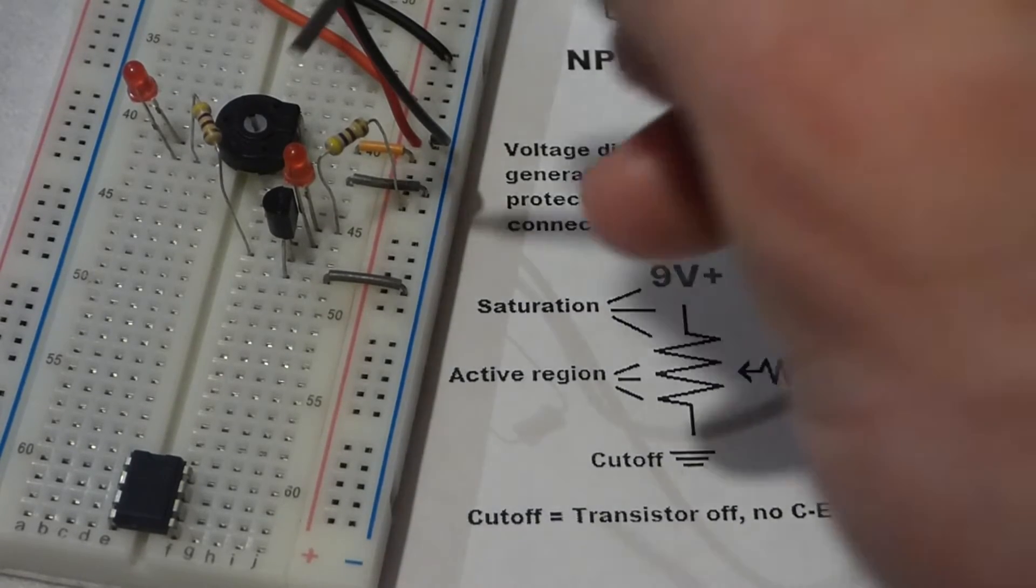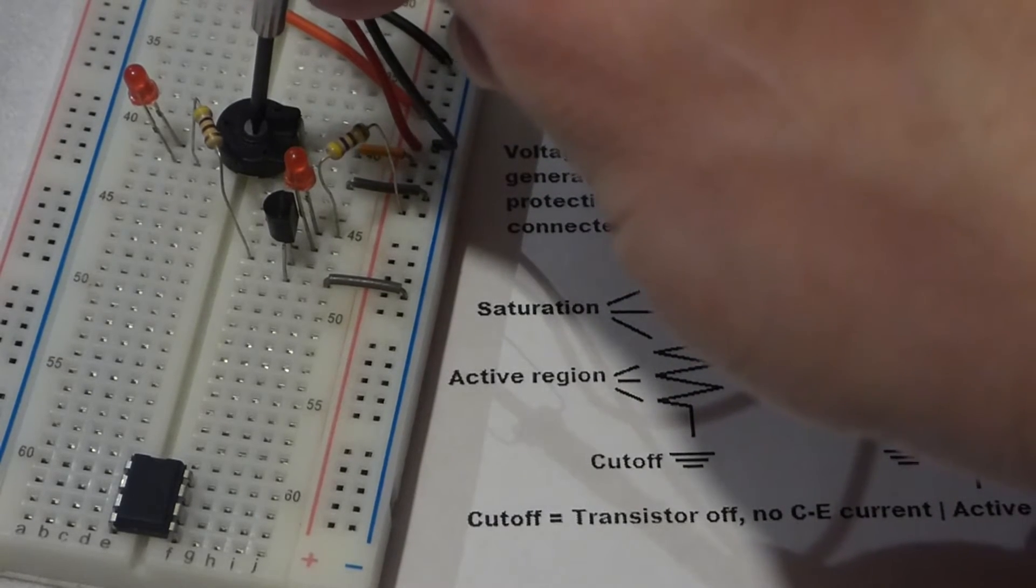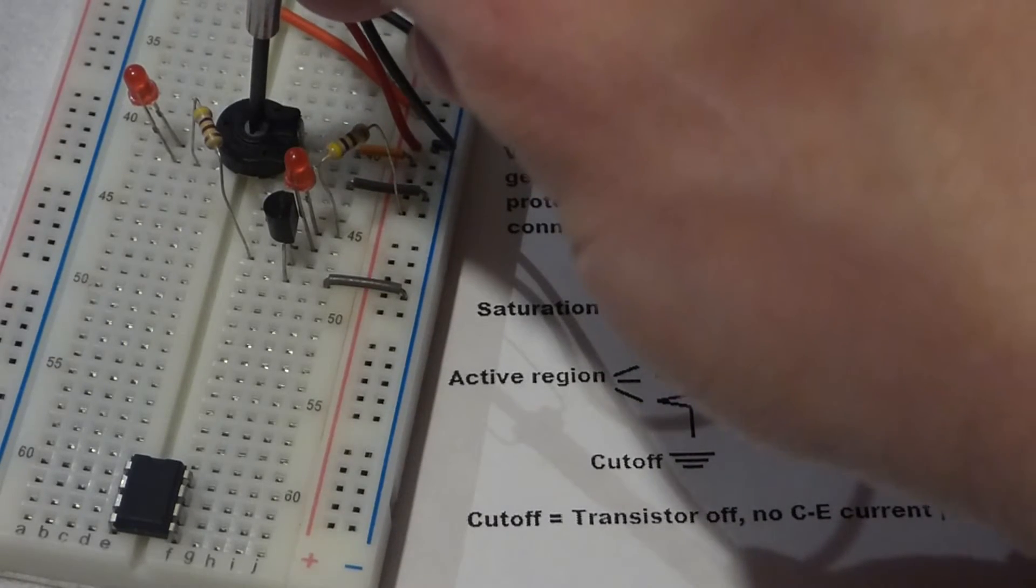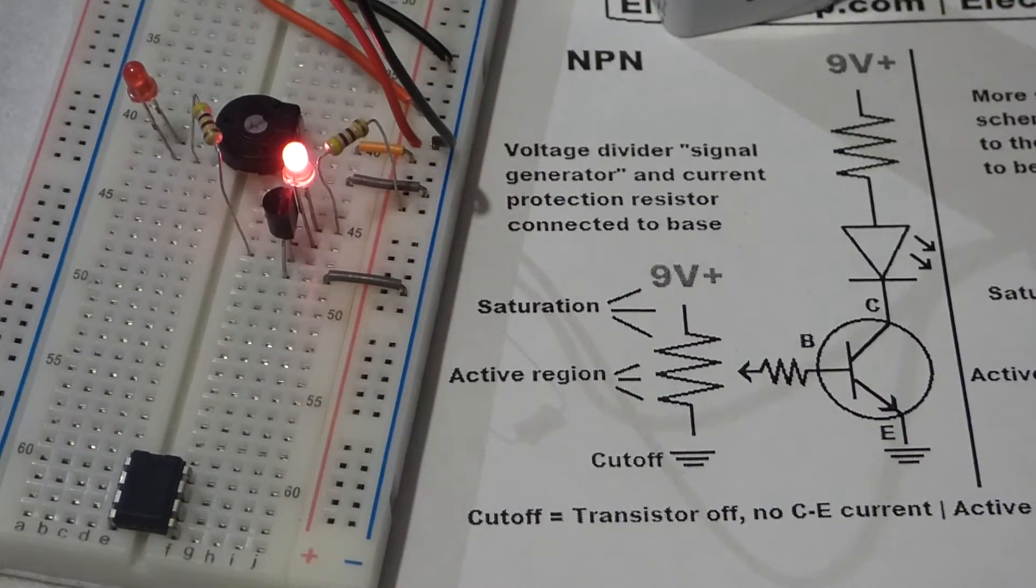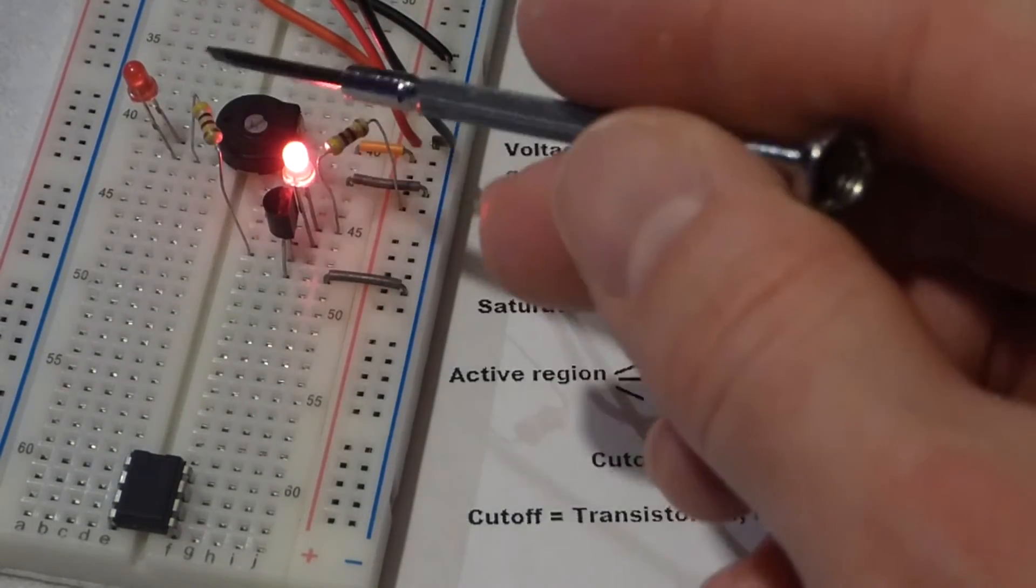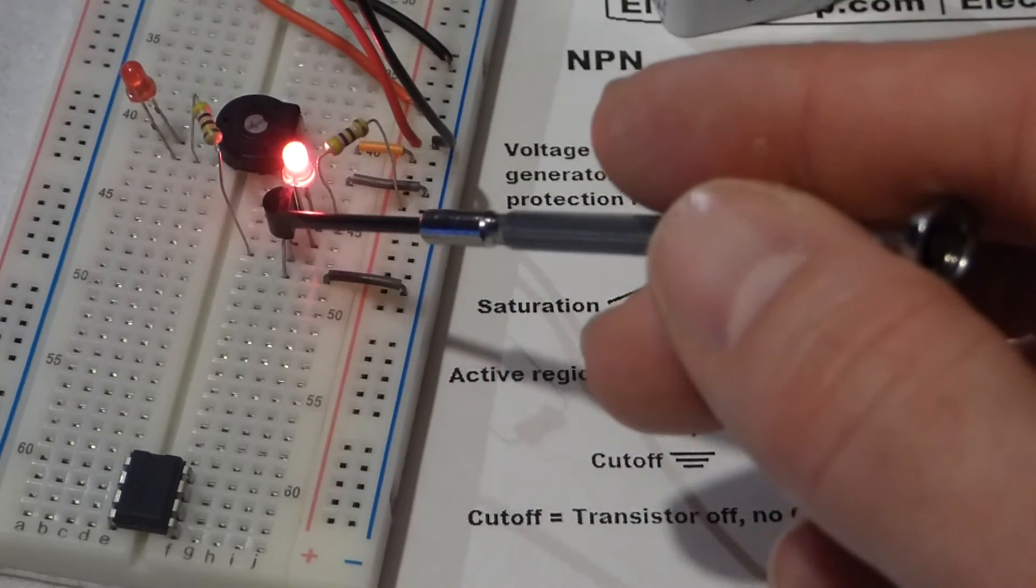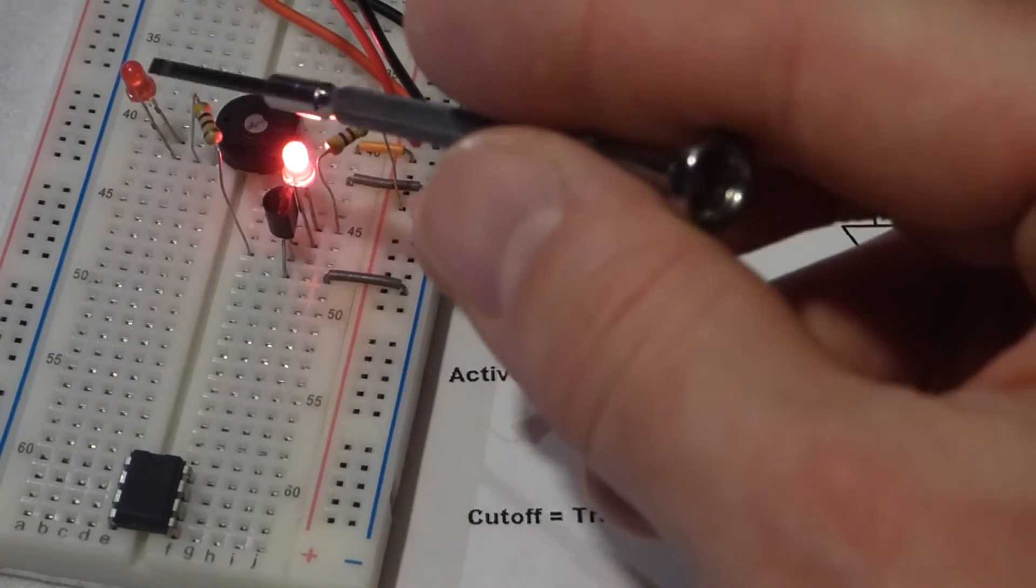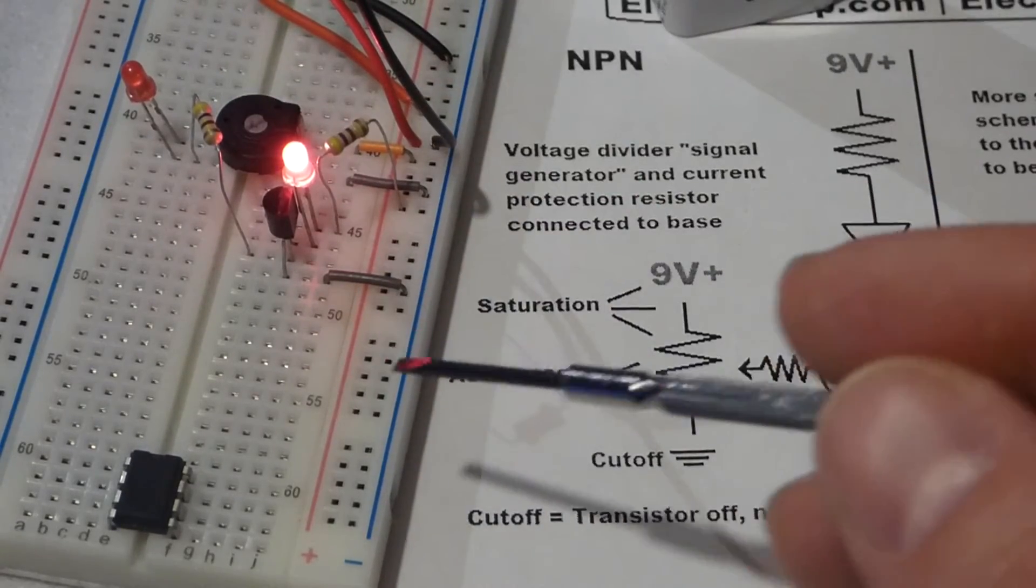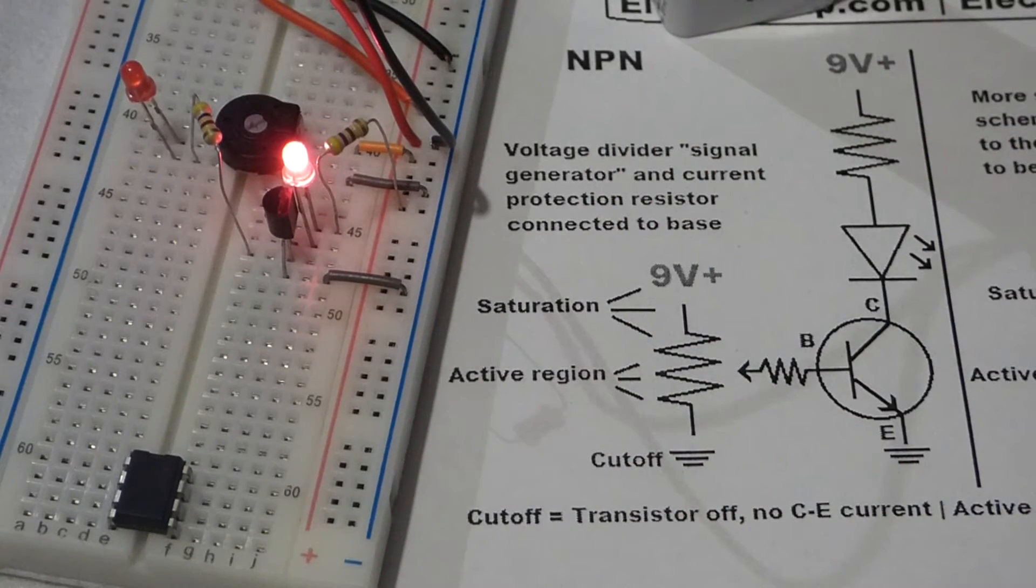And what you'll see is now the load starts lighting up. A little bit of current is going through this LED and then the resistor that comes to the base—a very small amount of current, not even really enough to light up the LED, just kind of a faint glow.